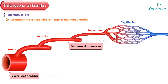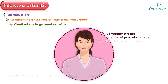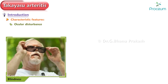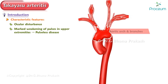Takayasu Arteritis is a granulomatous vasculitis of large and medium arteries, but it is classified as a large vessel vasculitis because it primarily affects the aorta and its primary branches. Women are affected in 80-90% of cases, with an age of onset usually between 10 and 40 years. It is characterized principally by ocular disturbances and marked weakening of pulses in the upper extremities, leading to the name 'pulseless disease.' It also has a strong predilection for the aortic arch and its branches, giving it the name aortic arch syndrome or giant cell aortitis.